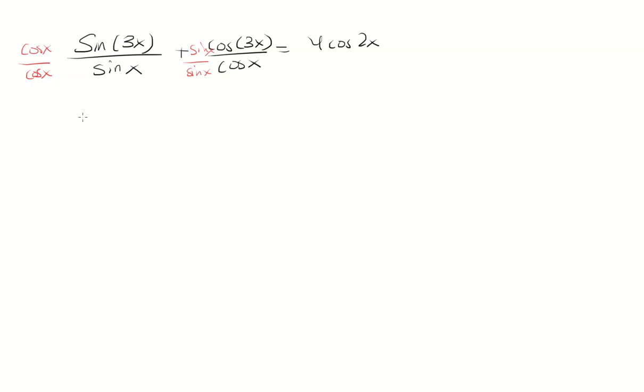So we're going to have sine 3x cosine x plus cosine 3x sine x. And then the denominator will be cosine x sine x.